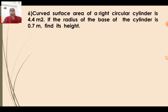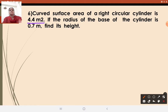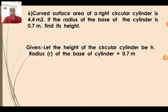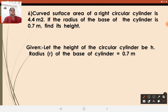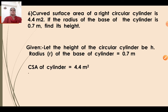Now let us see Question number 6. Curved surface area of a right circular cylinder is 4.4 meter square. If the radius of the base of the cylinder is 0.7 meter, find the height. What is given? The curved surface area is given as 4.4 meter square and the radius is given as 0.7 meter. We need to find the height. We will apply the same formula. Let the height be considered as H.